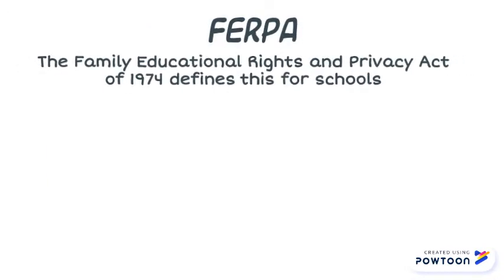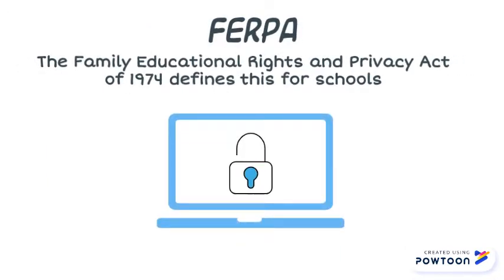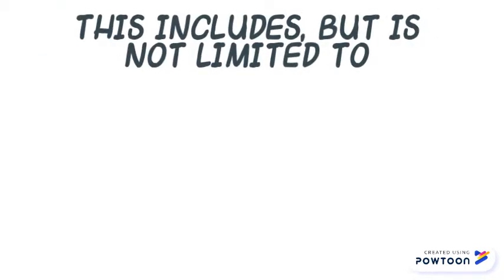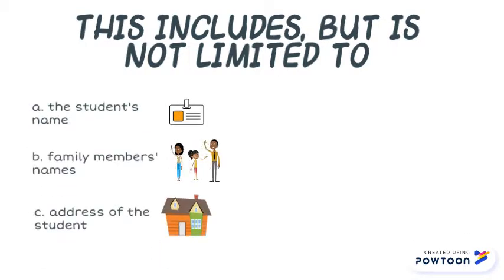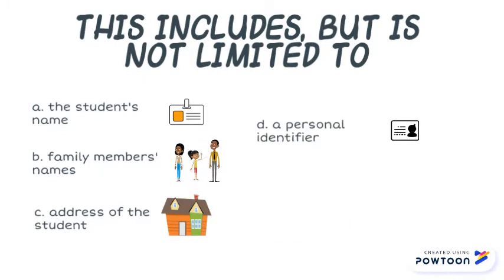FERPA, the Family Educational Rights and Privacy Act, defines this for schools. This includes, but is not limited to, the student's name, family member's names, the student's address or address of family members, a personal identifier such as social security number or biometric record.